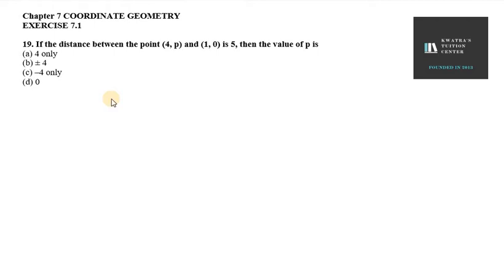Hello everyone, let's start with question number 19. So it says if the distance between the point (4,P) and (1,0) is 5, then the value of P is.